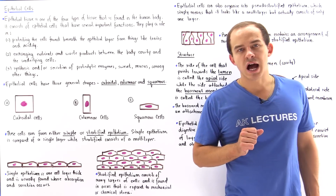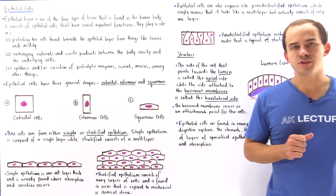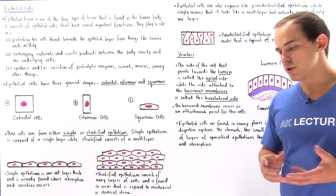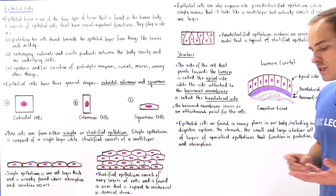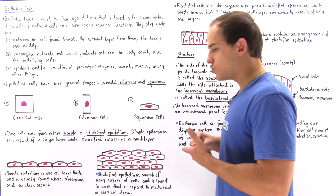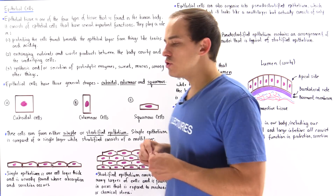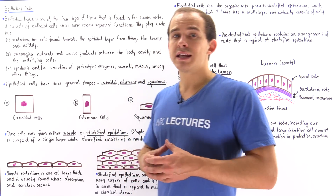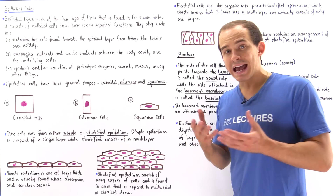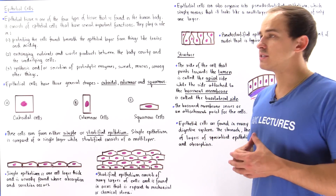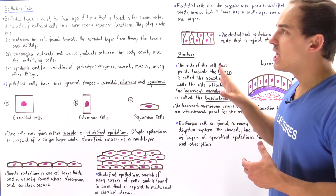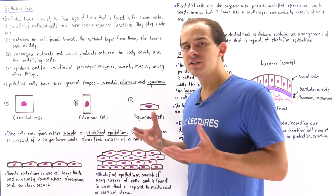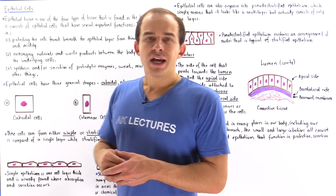There are four major types of tissues found in the human organism. We have connective tissue, muscle tissue, nervous tissue, and we also have a tissue that is found in our digestive system and excretory system, known as the epithelial tissue, or simply the epithelium.